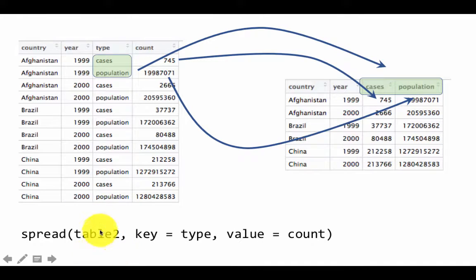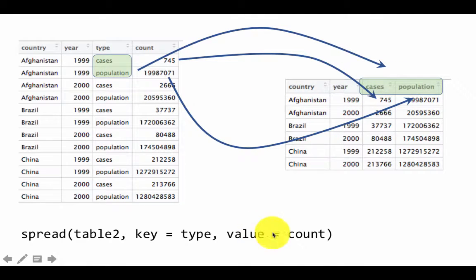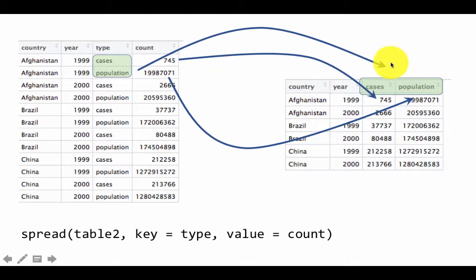The table on which we are operating is table 2. We say key equals type — when we say key, we are effectively saying it's the column whose unique values will become the new column names. The unique values in the type column are cases and population, so those become new columns in the output. Then we specify value equals count, meaning: take the corresponding count from that column and put it into the appropriate column. All counts corresponding to cases go into the cases column, and all counts corresponding to population go into the population column. That is how spread works.